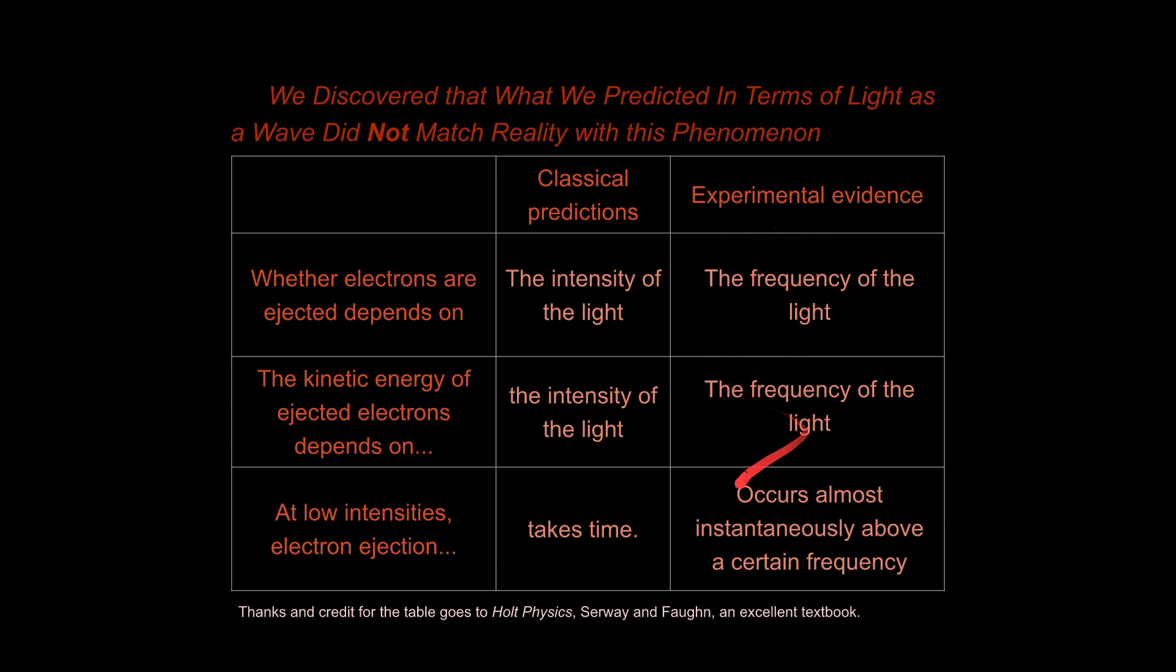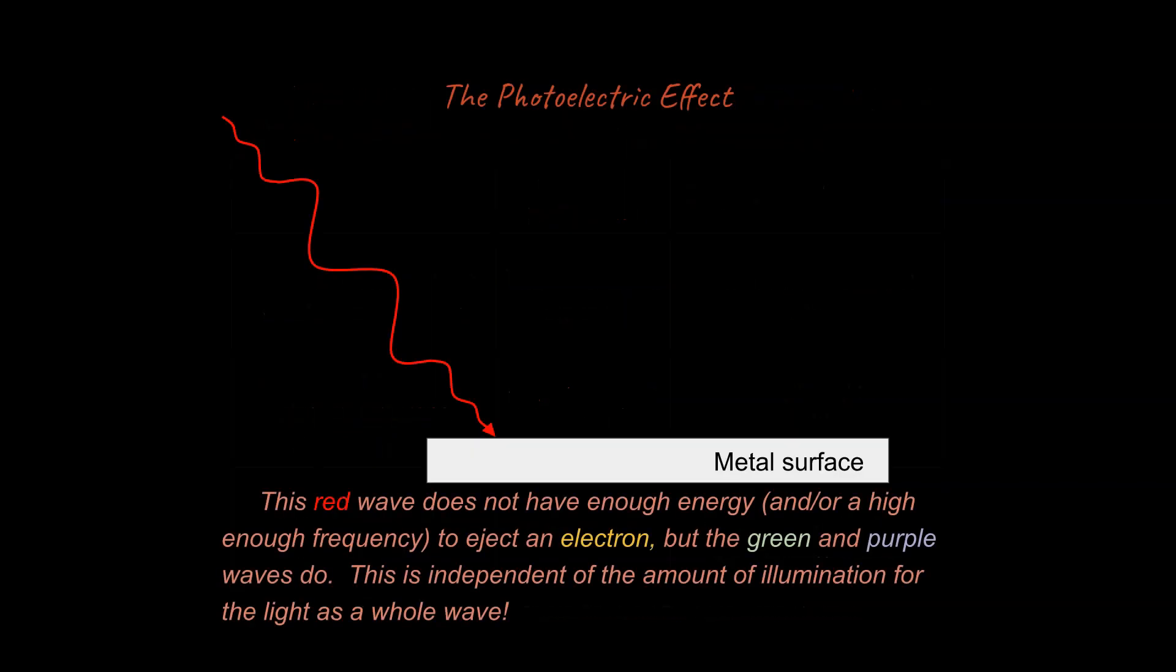So what we're seeing is our experimental evidence does not make sense if we think of light as simply a wave. Light here is behaving more like a particle, and scientists could just not figure this out. They couldn't wrap their minds around that light, in some cases, behave like waves, and in some cases behaves like a particle. So it took Einstein to be able to figure that out, and I do want to talk a little bit more about it.